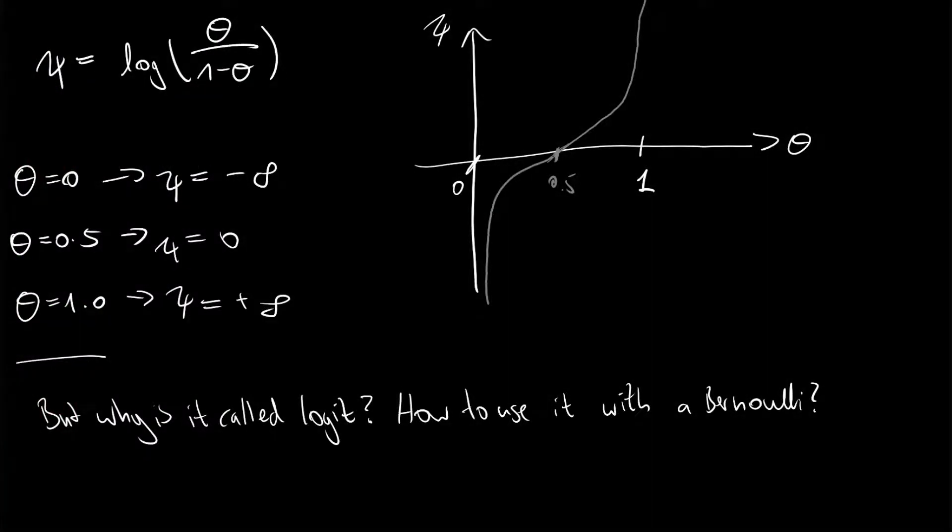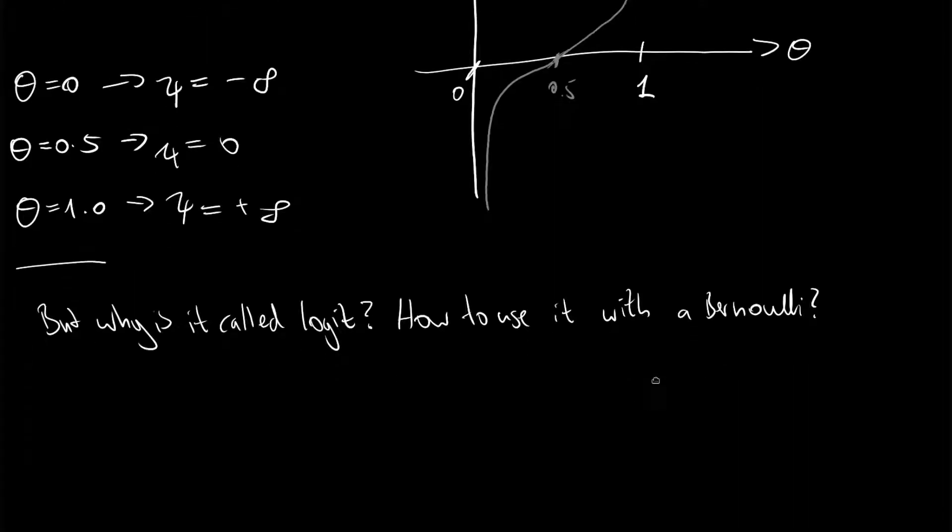But now you still might ask yourself, why is it called logit and how can we use it to define a Bernoulli? For this, let us find the inverse mapping from psi to theta. We said that psi is the logarithm of theta over 1 minus theta. Let's rearrange this equation.